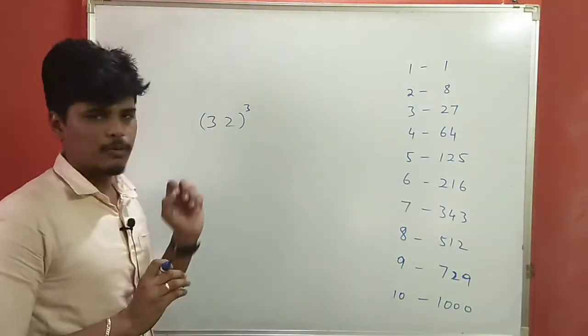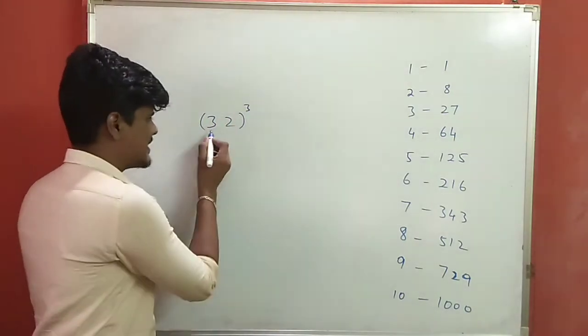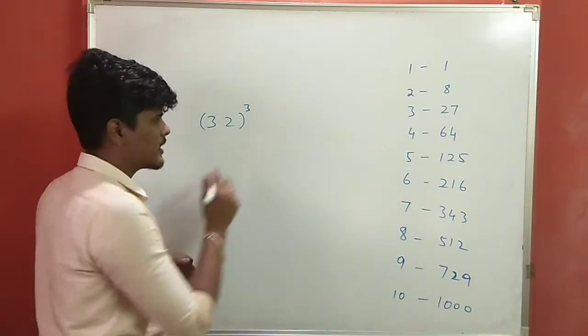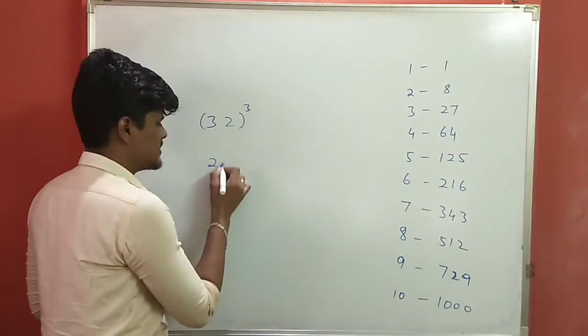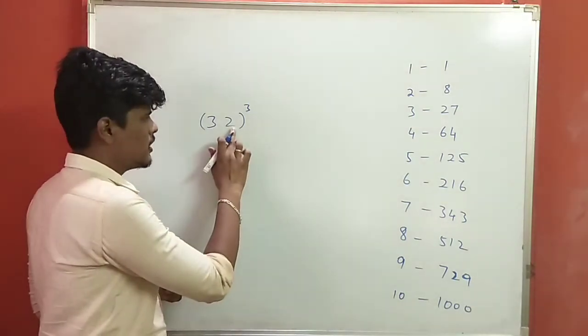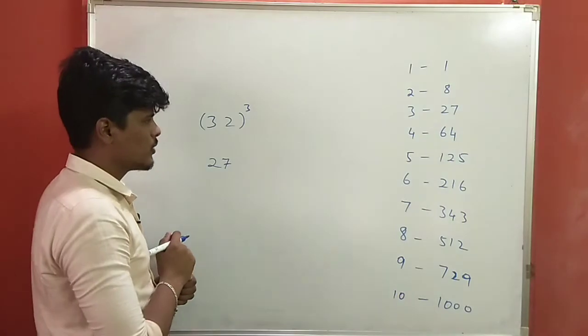So if we want to see a cube first, we can see what we need to do. How do we calculate here? Three cube is equal to 27. We can see that cube first. Two to the cube, two to the cube is 8.